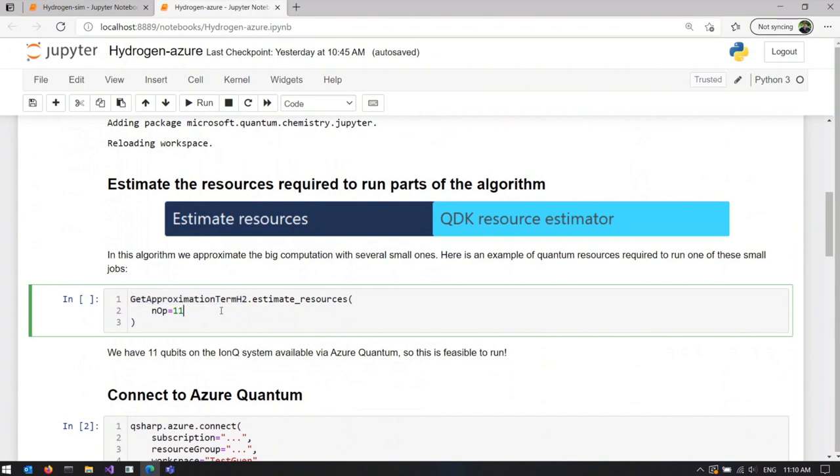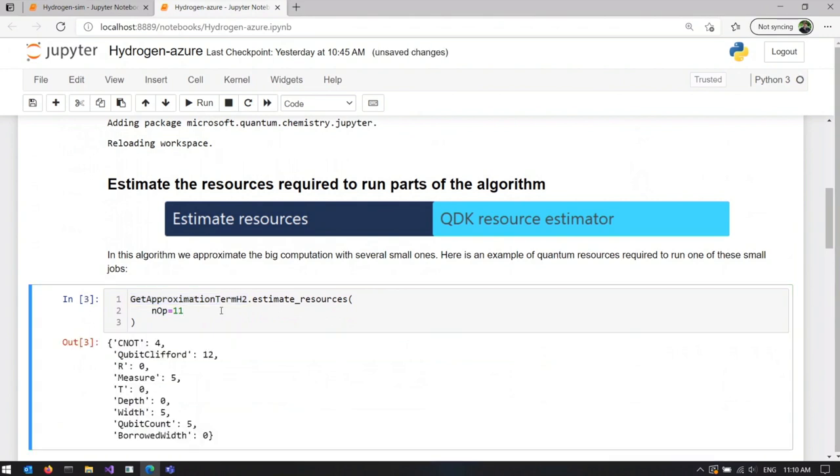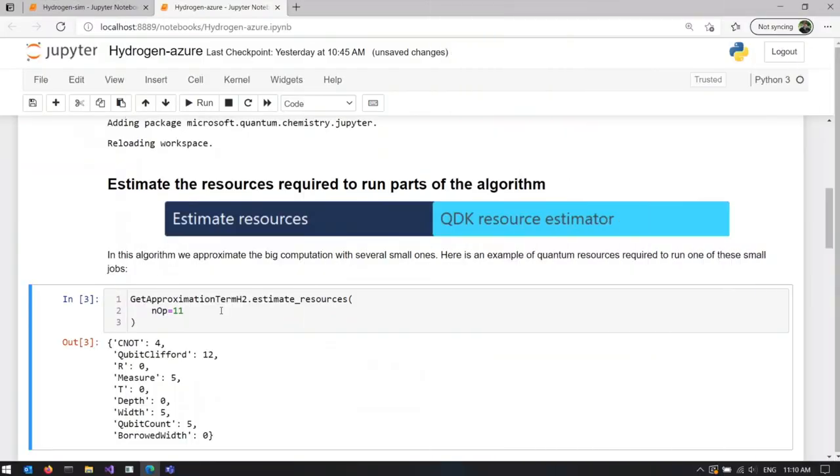In this approximation, we're going to split up this big computation into multiple smaller ones, run them independently, and then combine their results after the quantum programs are done running.